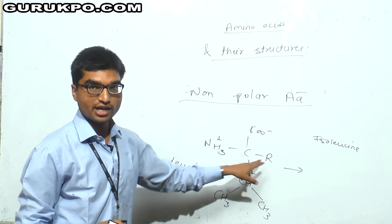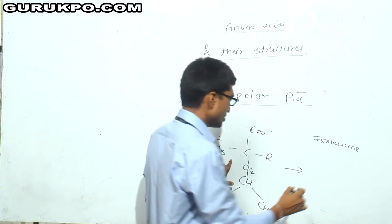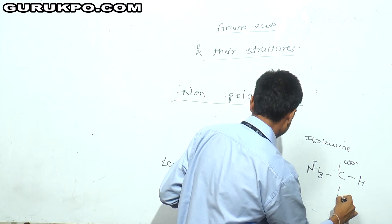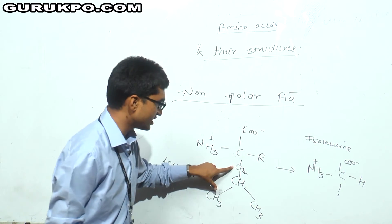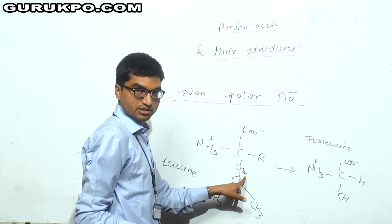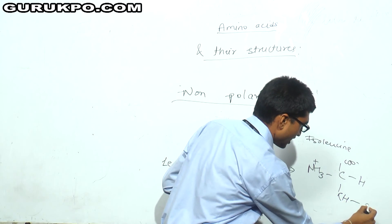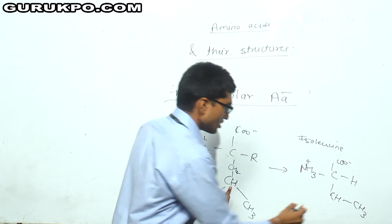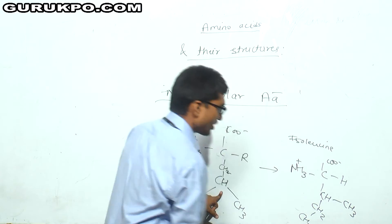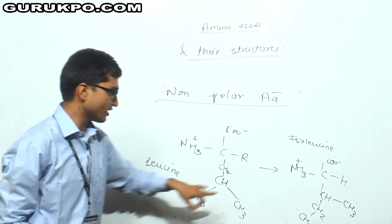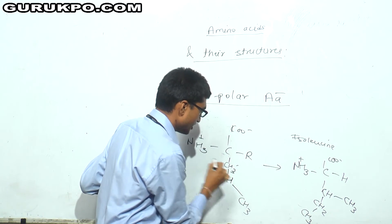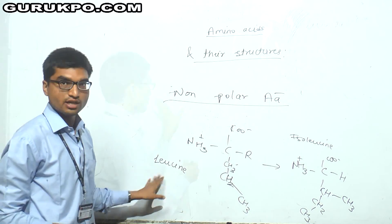Isoleucine and leucine are both isomers. You just need to understand the basic difference between them. In place of R, we are having CH2, CH, CH3 group, and another CH3 group. If I remove the hydrogen from the CH group and place a CH3 group there, with CH2 and CH3 remaining, I have just formed isoleucine.